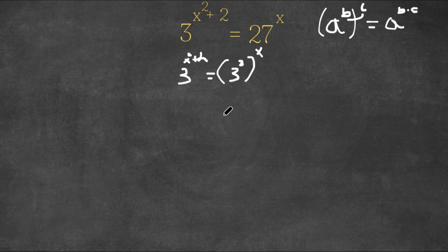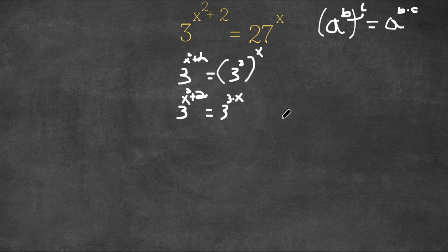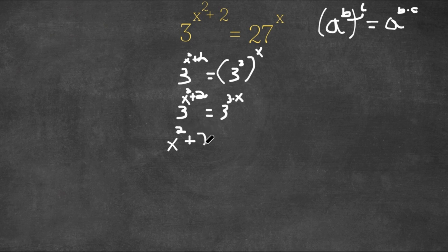So over here we have 3 to the power of 3 to the power of x, and this is equal to 3 to the power of 3 times x, which is just 3x. This is still equal to 3 to the power of x squared plus 2. Now remember, if you have the same bases — as we do now — we can simply ignore the bases and make the two exponents equal to each other, because if the two bases are the same then so must the exponents. So now we have x squared plus 2 equals 3x.